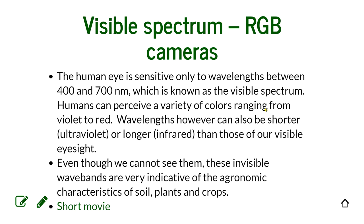So far we have been working in the visible spectrum, which is what the human eye can see — between 400 and 700 nanometers. We can see a variety of colors: the lower frequencies are violet and the higher are red. Below 400 nm is the ultraviolet spectrum, and above 700 nm it turns into infrared. These invisible wavelengths are very indicative of agronomic characteristics of soil, plants and crops.